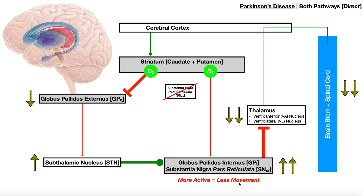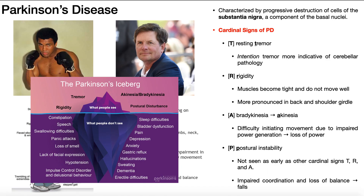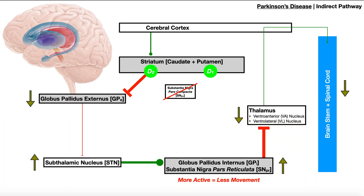This less movement caused by impacts on both the direct and indirect pathways really explains some of those signs and symptoms of Parkinson's disease that we talked about in the previous video. For example, this bradykinesia — which is that difficulty initiating movement due to impaired power generation in muscles — eventually will progress to loss of power totally, which is akinesia. It's the A of that TRAP — the cardinal signs of Parkinson's disease. We talked about that in the previous video, so if you want more detail go back and watch that. Hopefully after this video you have a better understanding of how Parkinson's disease impacts the basal nuclei and produces hypokinesis. Thanks for tuning in.